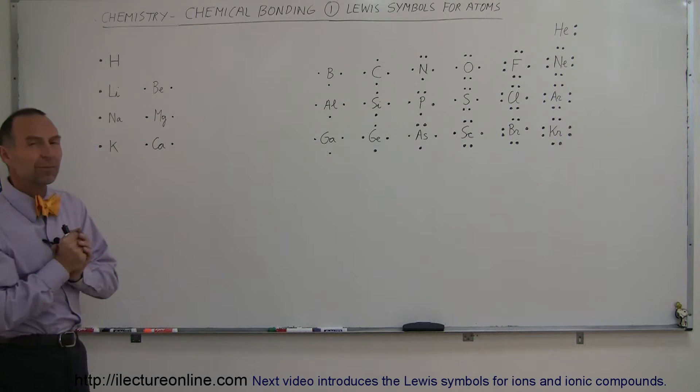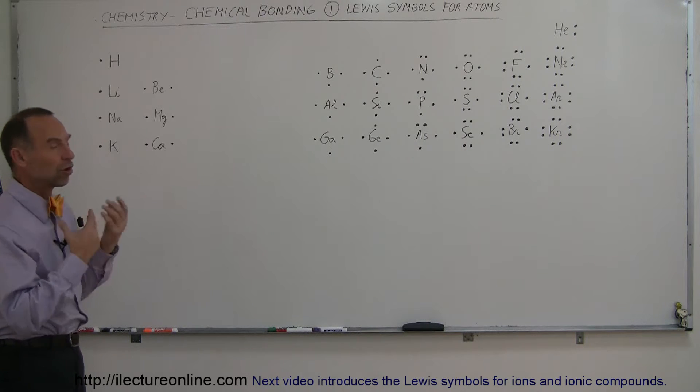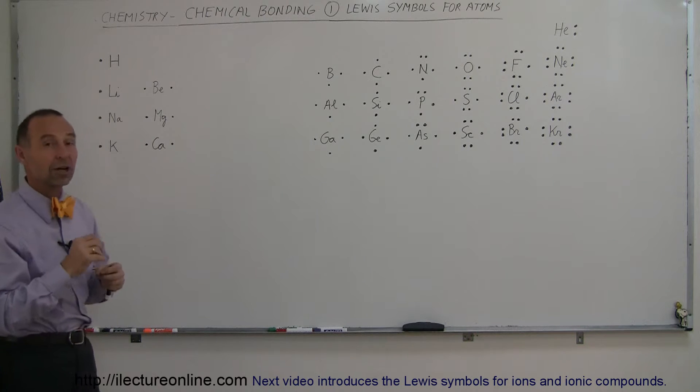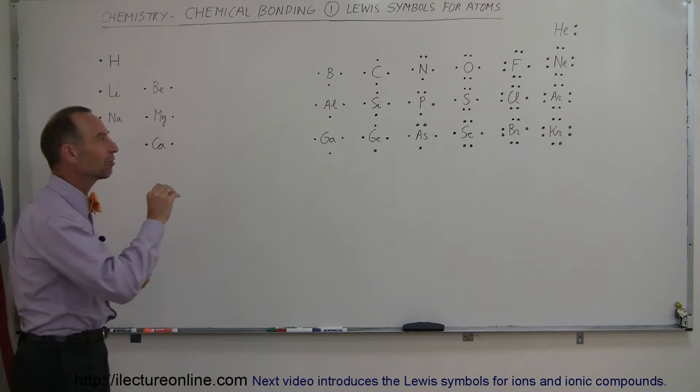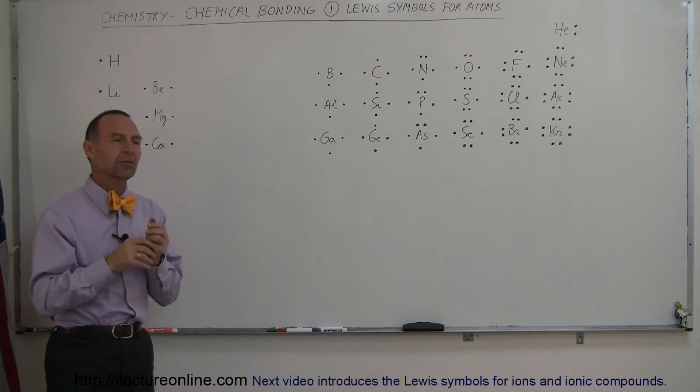So we call the symbolism that we use to indicate chemical bonding Lewis structures and before we can talk about the Lewis structures we have to talk about the Lewis symbols. The symbols for each atom that indicate what the atom looks like from a bonding perspective.